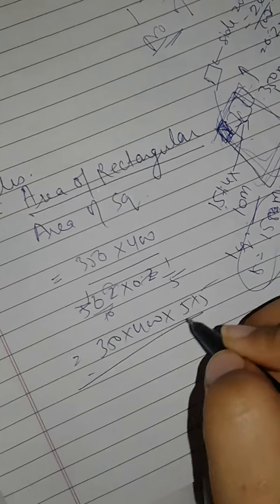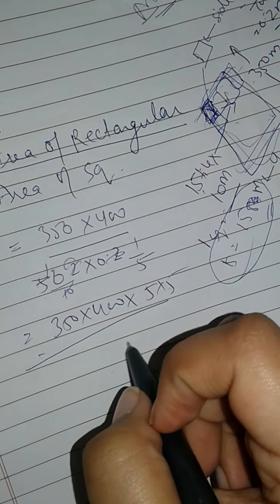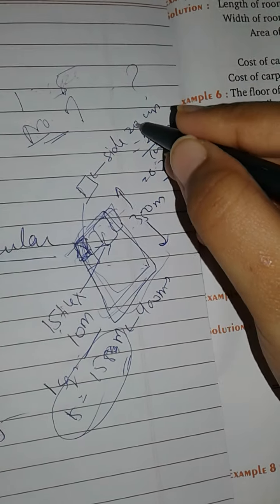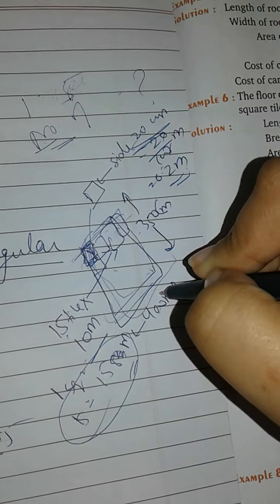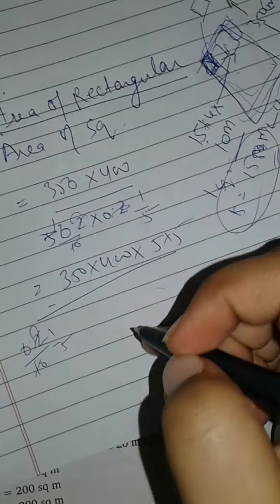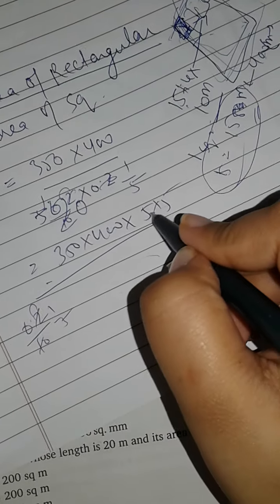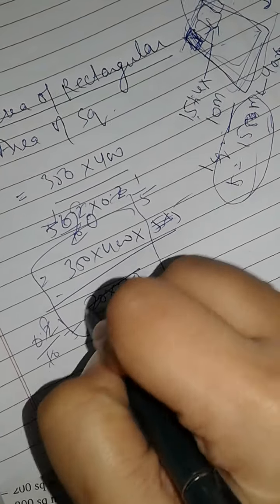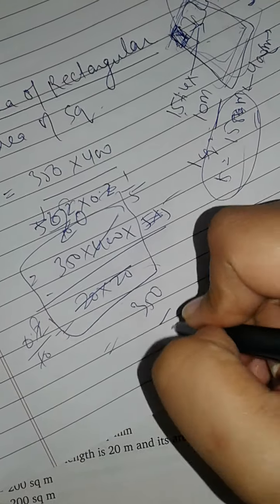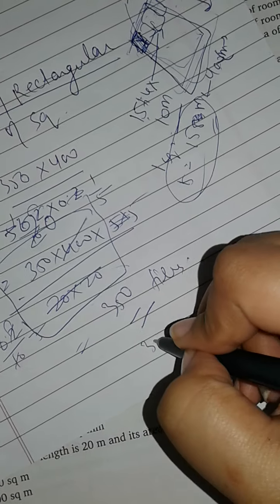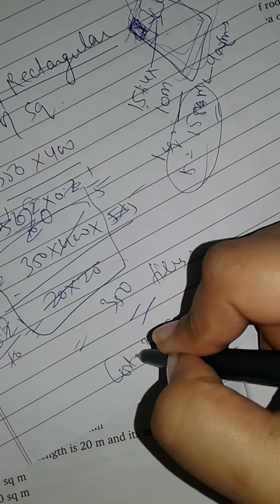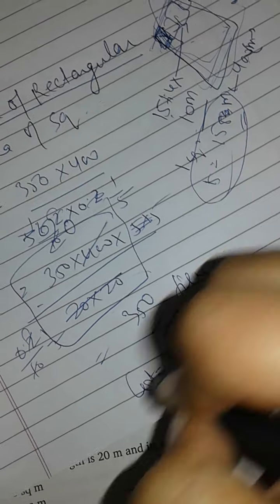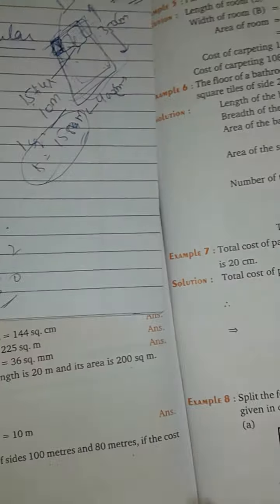Since we took everything in centimeters, the units are consistent. 20 into 20 gives 400, which cancels with 400 in the numerator, leaving 350 tiles. Now one tile costs 5 rupees, so the cost of 350 tiles is 350 into 5, which is 1750. That is our answer.